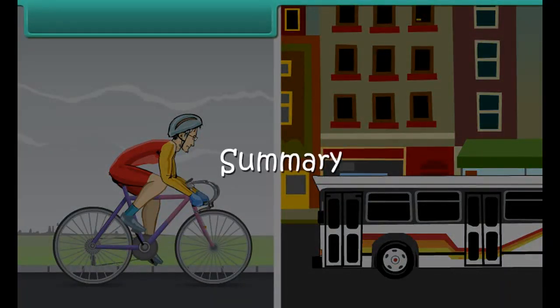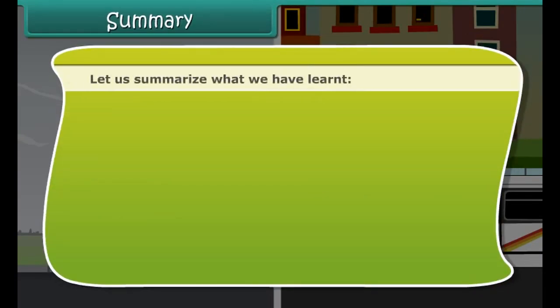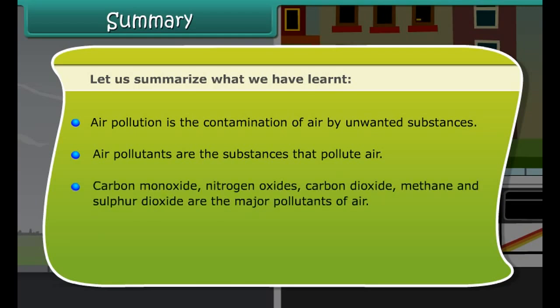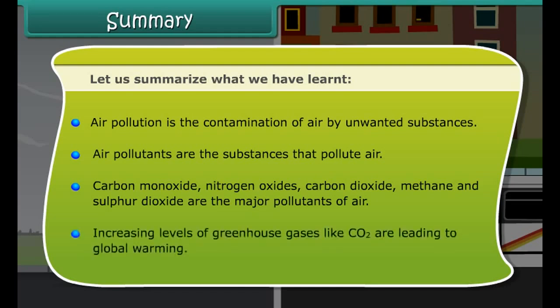Let us summarize what we have learned. Air pollution is the contamination of air by unwanted substances. Air pollutants are the substances that pollute air. Carbon monoxide, nitrogen oxides, carbon dioxide, methane, and sulfur dioxide are the major pollutants of air. Increasing levels of greenhouse gases like CO2 are leading to global warming.